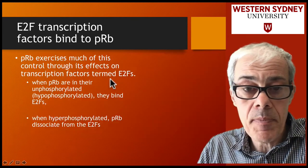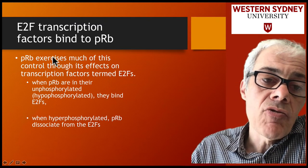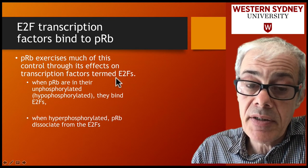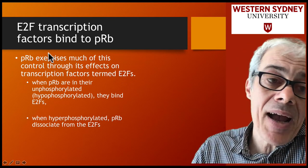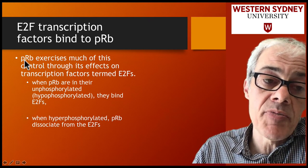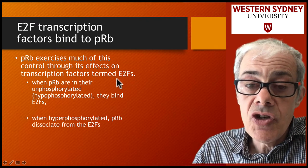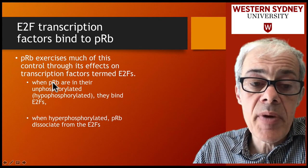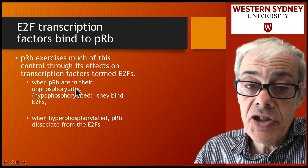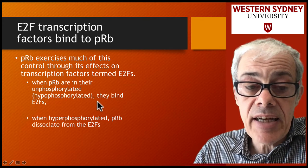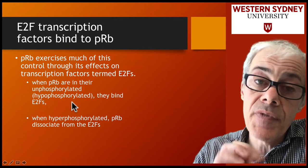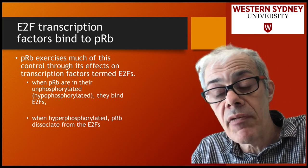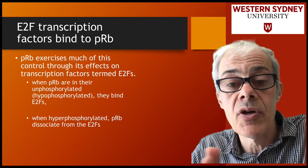Putting the two diagrams together: retinoblastoma's function is to bind to transcription factors, and when these transcription factors are bound by the tumor suppressor protein, they become inactive. When retinoblastoma is unphosphorylated — early G1 — it binds and inactivates these transcription factors. When you phosphorylate retinoblastoma, you release the transcription factors, and it's these transcription factors that drive progression across the restriction point.